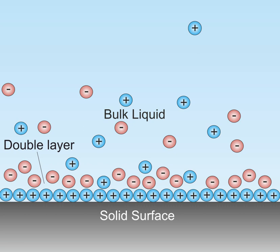A double layer is a structure that appears on the surface of an object when it is exposed to a fluid. The object might be a solid particle, a gas bubble, a liquid droplet, or a porous body.